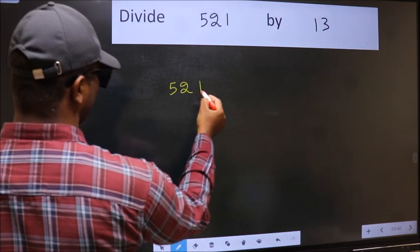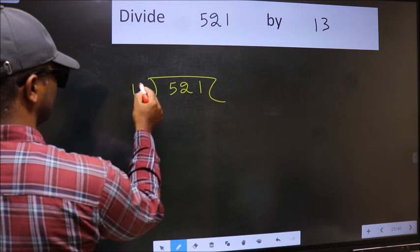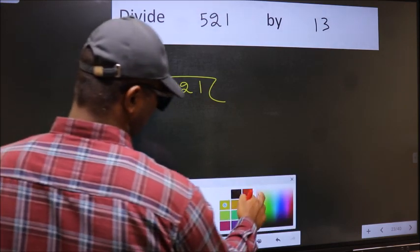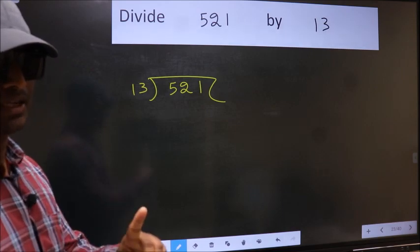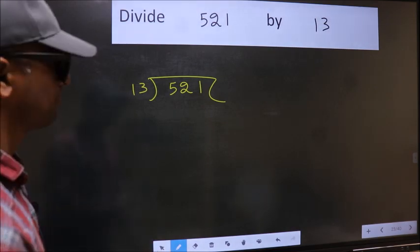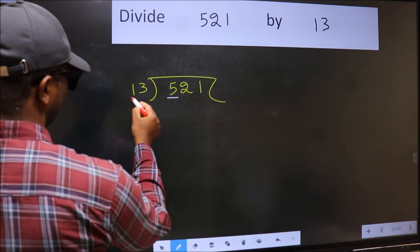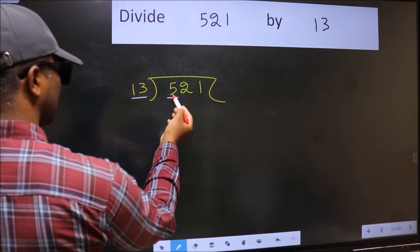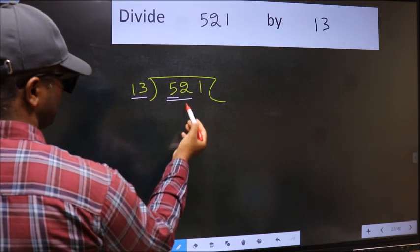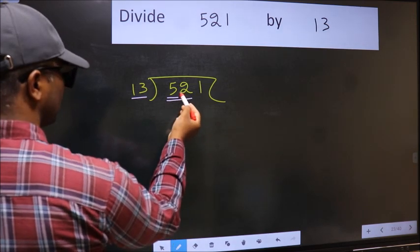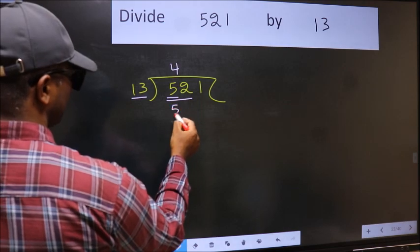521 and 13 here. This is your step 1. Here we have 5 and here 13. 5 is smaller than 13, so we should take two numbers: 52. When do we get 52 in the 13 table? 13 fours 52.